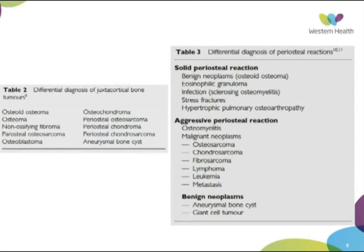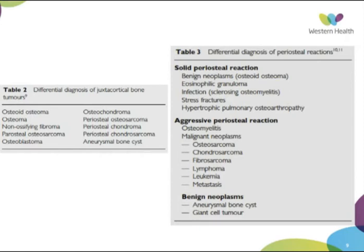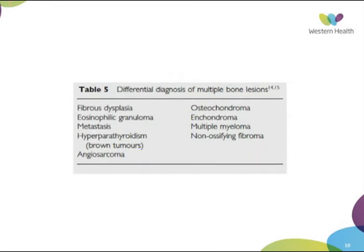Juxtacortical bone tumours — osteoid osteoma and osteochondroma are probably the most common we see, ignoring the malignant ones. We always look for a periosteal reaction in lesions, which gives an indication of whether the lesion is latent or more aggressive. A solid periosteal reaction — thickened cortical bone — is commonly associated with osteoid osteoma. An aggressive periosteal reaction is seen in acute osteomyelitis, but many malignant conditions also present that way, so an aggressive periosteal reaction should make you think strongly of a malignant condition.